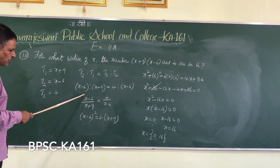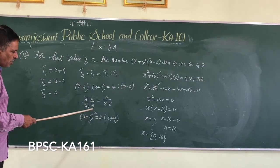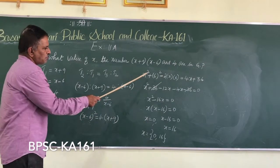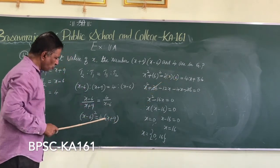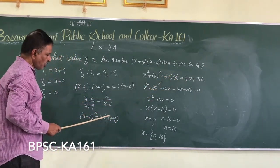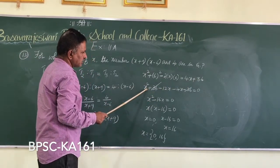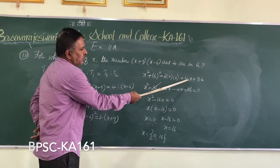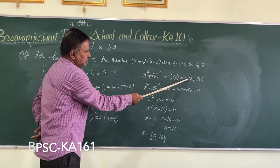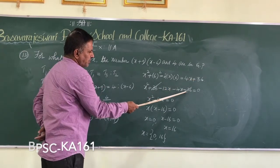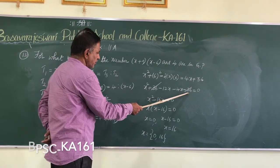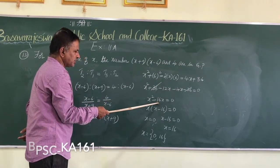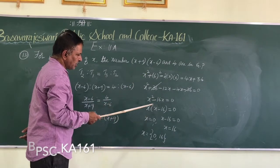After cross multiplying, X minus 6 whole square equals 4 times X plus 9. Expanding using (a minus b) whole square: X squared plus 36 minus 12X equals 4X plus 36. Bringing terms to the left side, plus 36 and minus 36 cancel. Both X terms have the same sign, so adding gives minus 16X, resulting in X squared minus 16X equals 0.